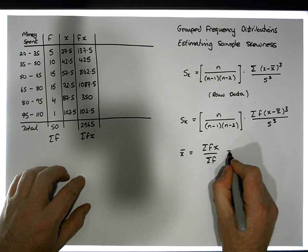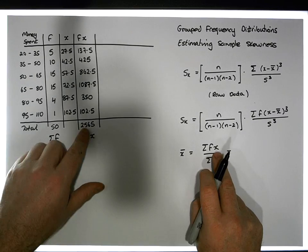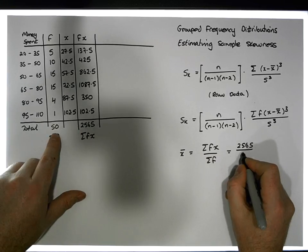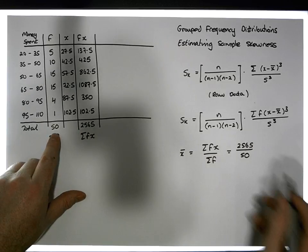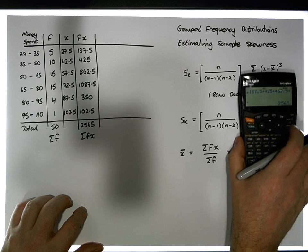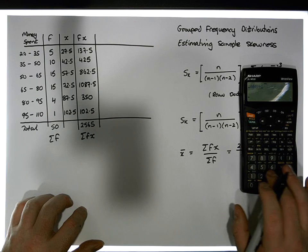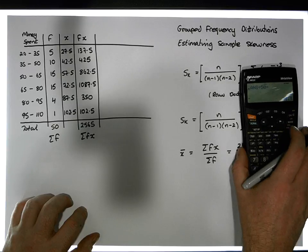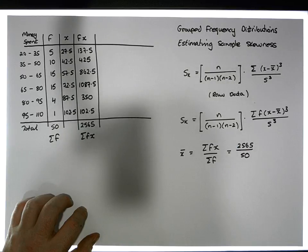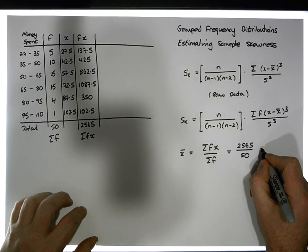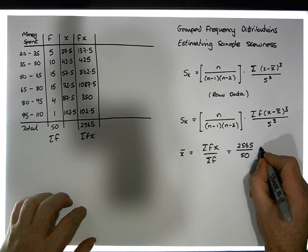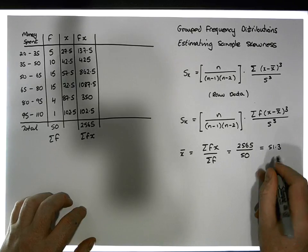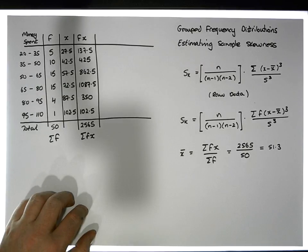Now we can calculate the sample mean. x̄ = Σ(f·x) / Σf = 2565 / 50, which gives us a sample mean of approximately 51.3.